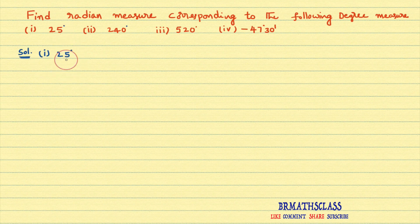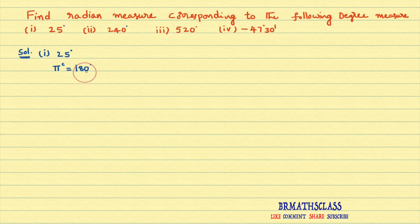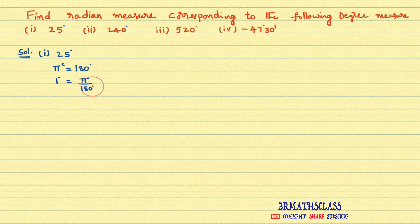I want to convert 25 degrees into radian measure. In previous classes, we learned this: π radians equal to 180 degrees. This is the main point in this problem. π radians is 180 degrees. What is 1 degree from this? You divide both sides by 180. What is 1 degree? 1 degree is π divided by 180 radians.